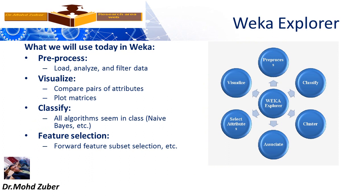Weka Explorer. The Weka Explorer covers the following things: pre-processing, classify, cluster, associate, select attribute, and visualization. The first tab is preprocess — load, analyze, and filter data. Visualize and compare pairs of attributes using a plot matrix. Classify using all available algorithms such as Naive Bayes, etc. Feature selection includes forward feature subset selection, etc. These are all features of the Weka Explorer.